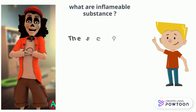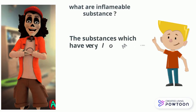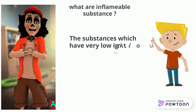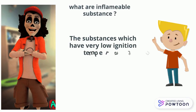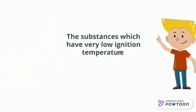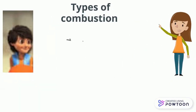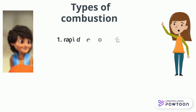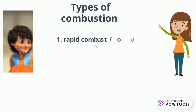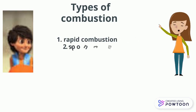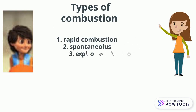What are inflammable substances? The substances which have very low ignition temperature are known as inflammable substances. Types of combustion: first, rapid combustion; second, spontaneous combustion; and the third one is explosion.